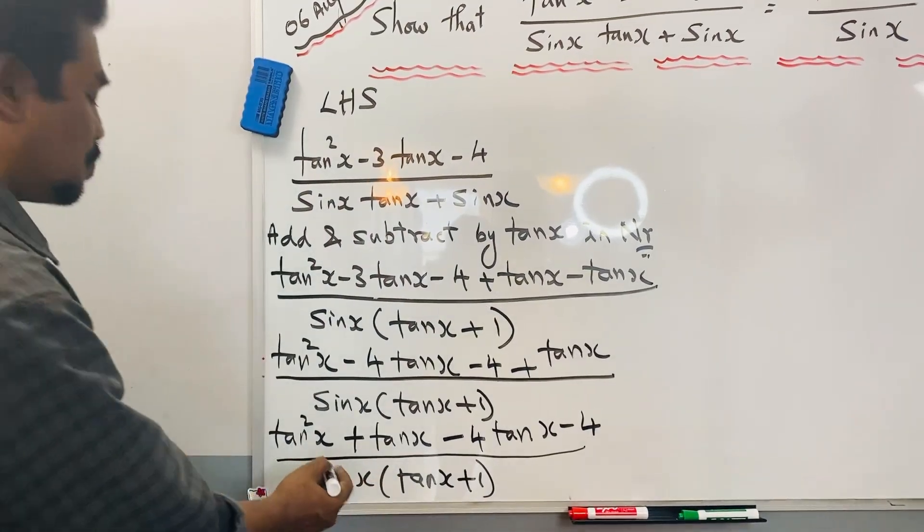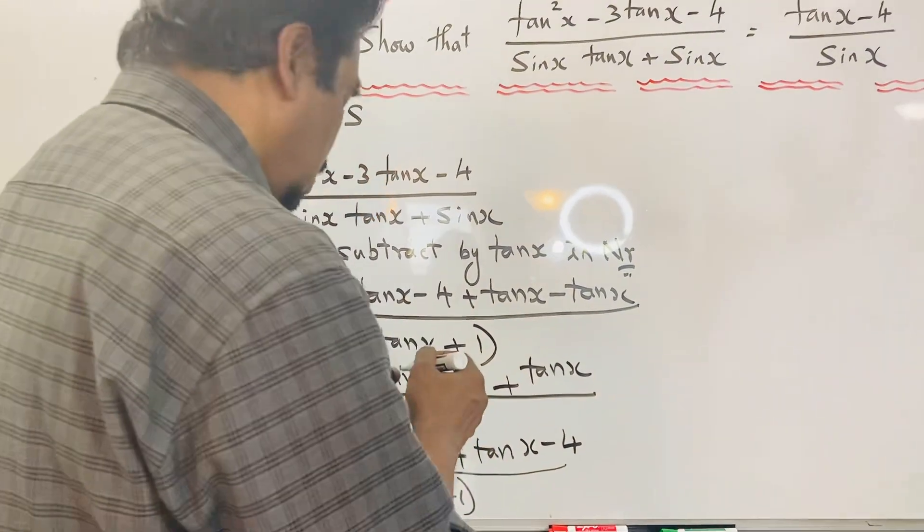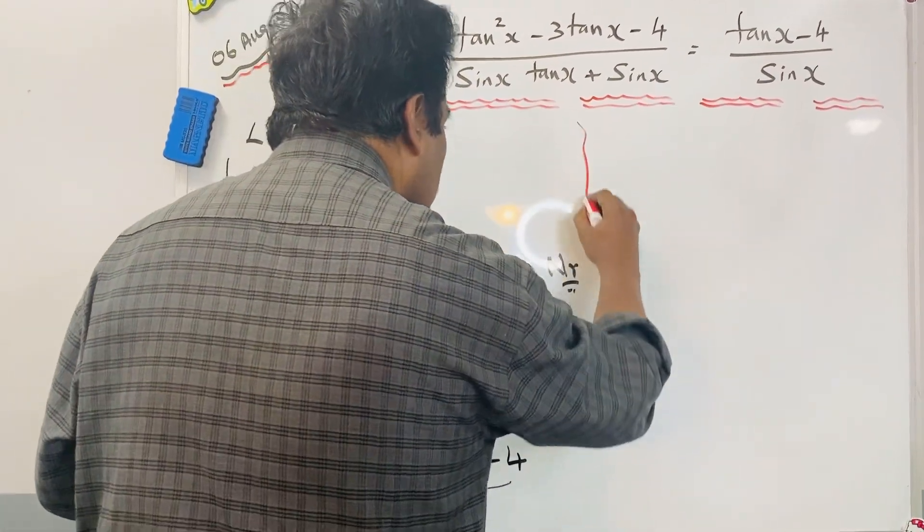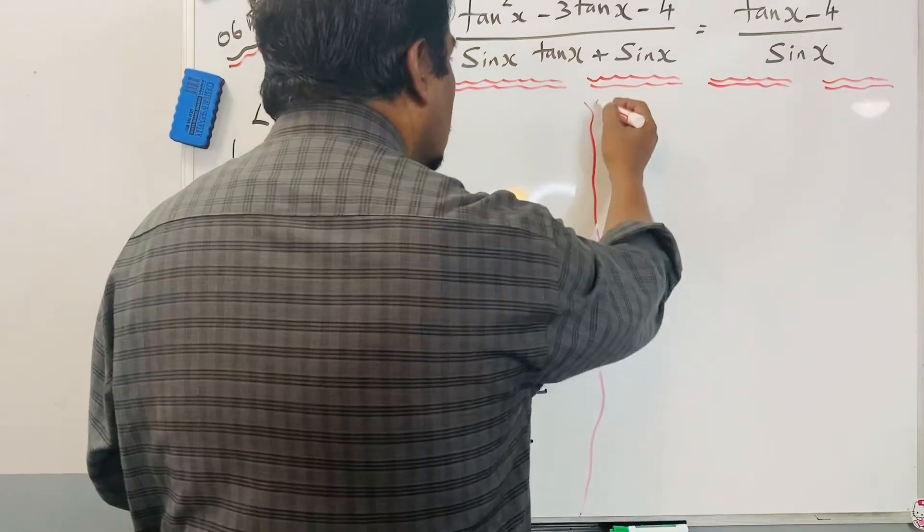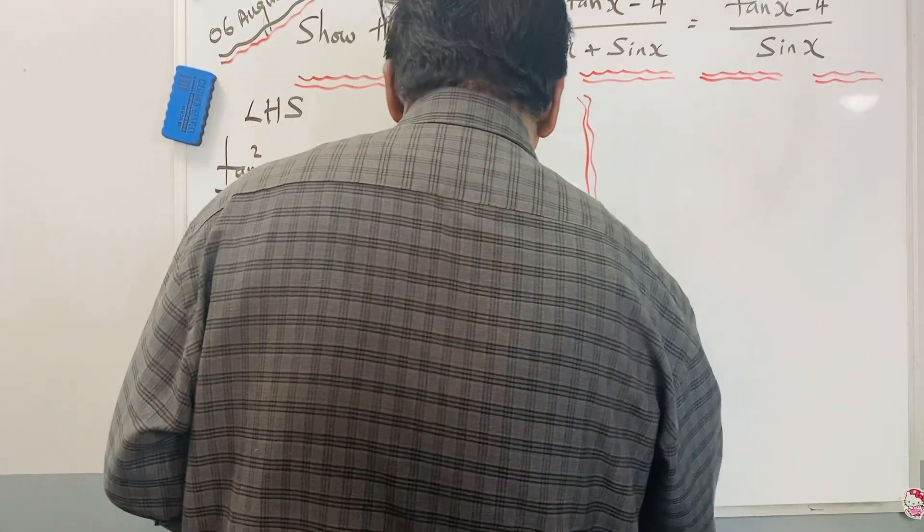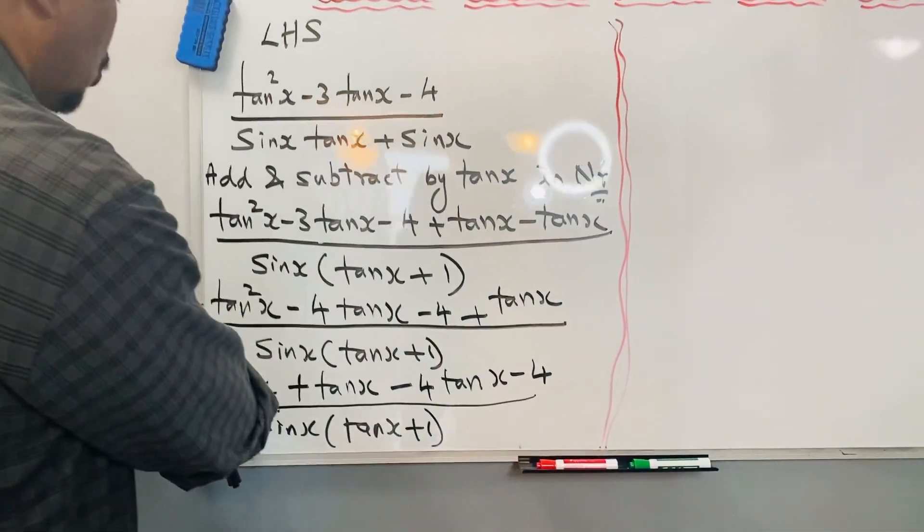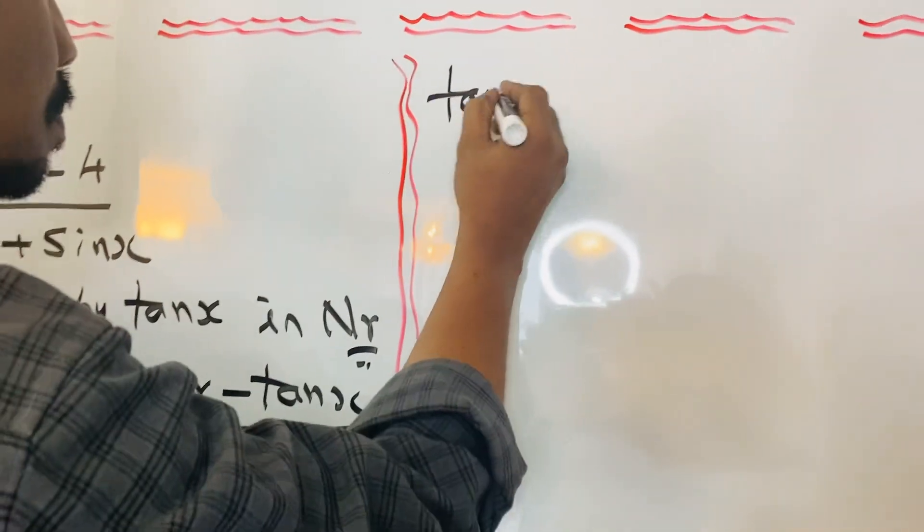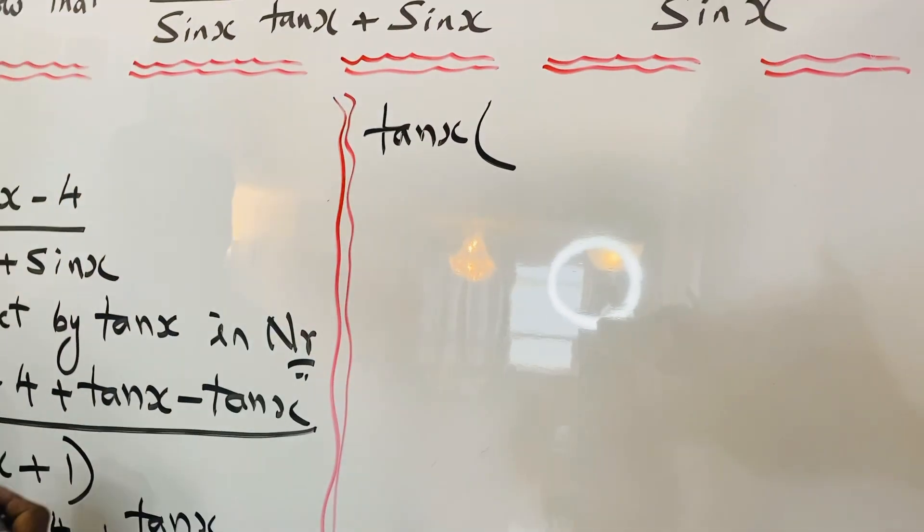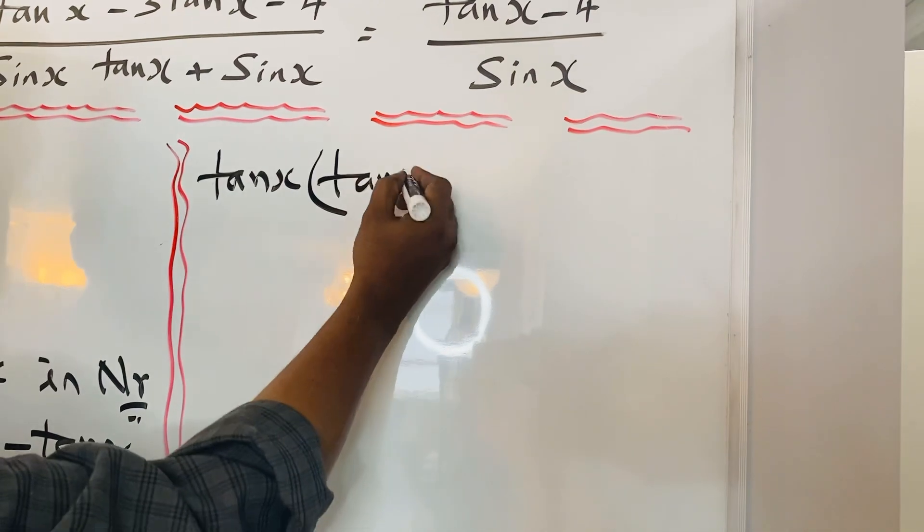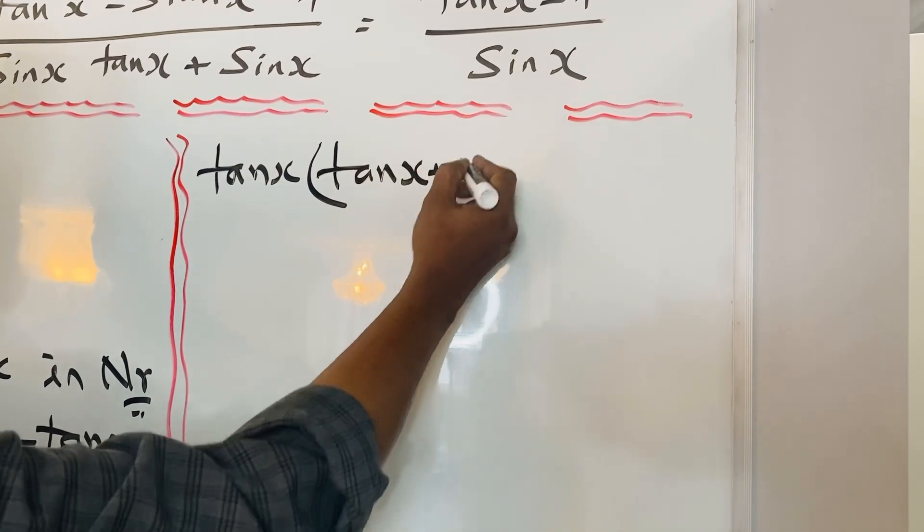So everything is fine. You can go to the next step. I split the board. So here tan²x, tanx. I can take tanx outside. Take tanx outside. What will be inside? Tanx + 1.